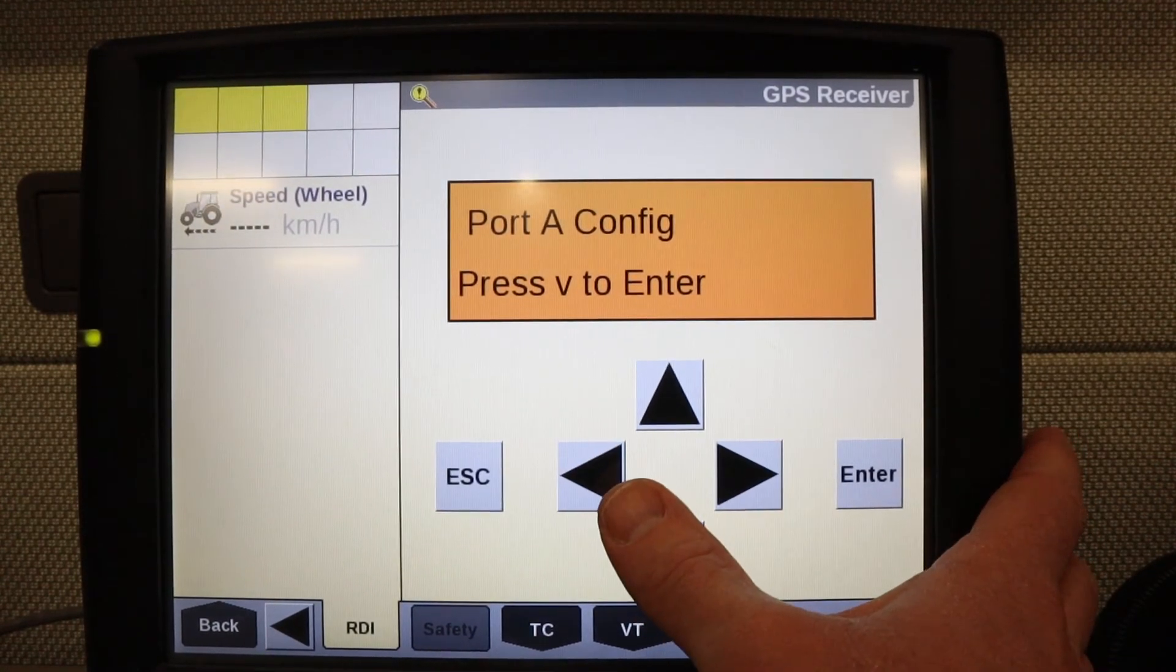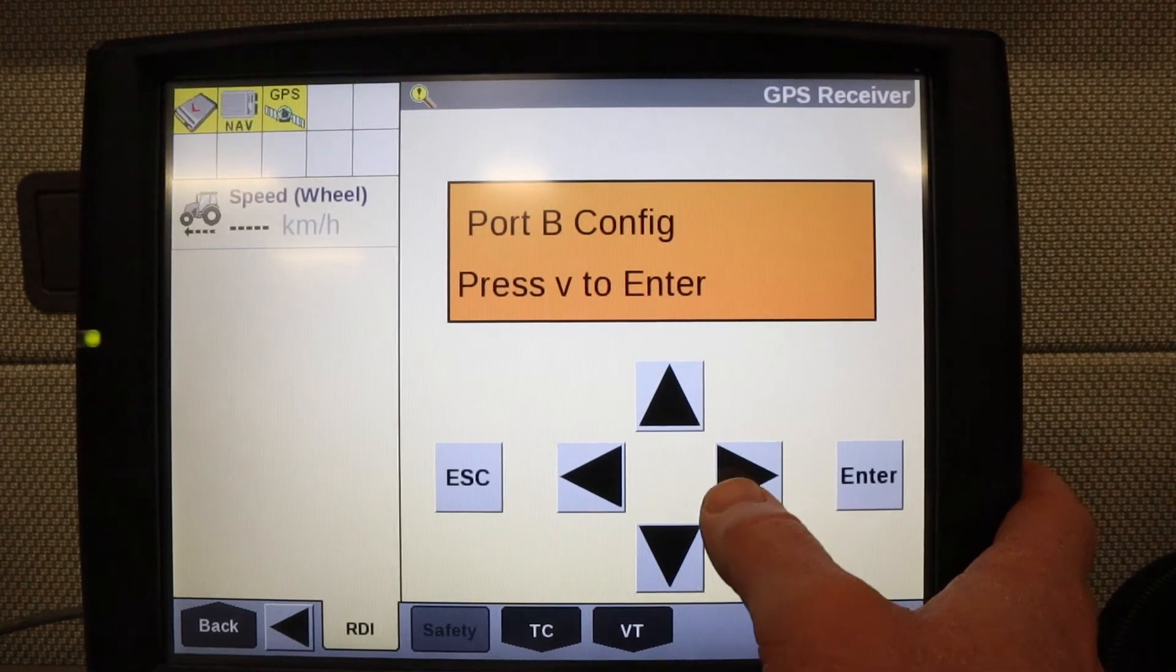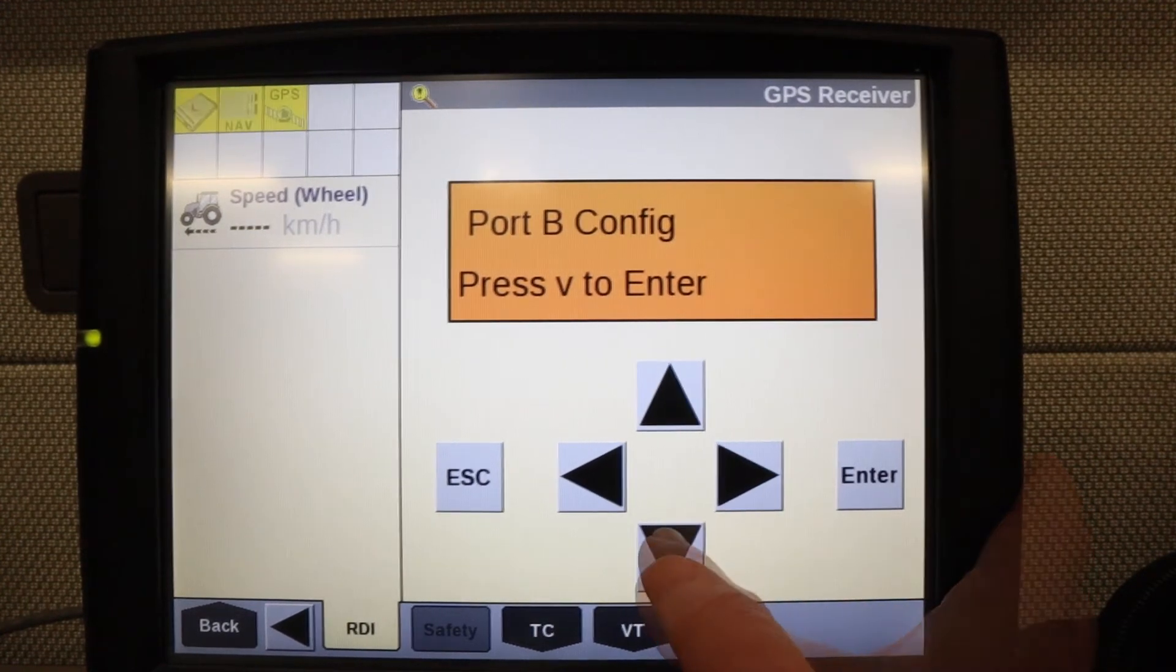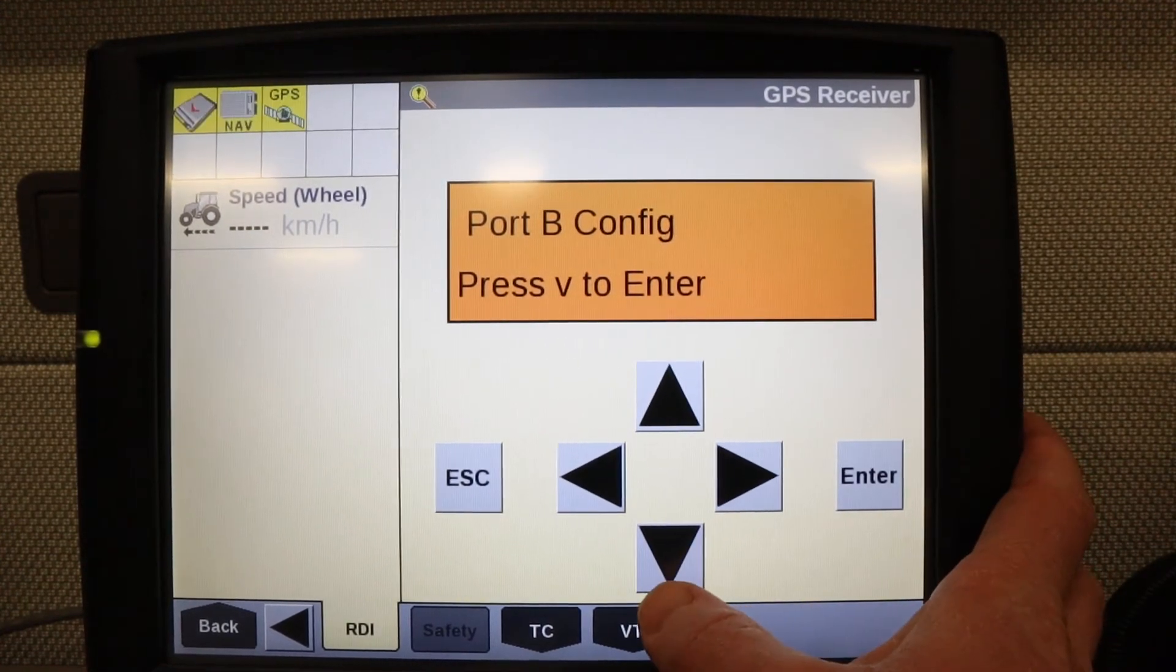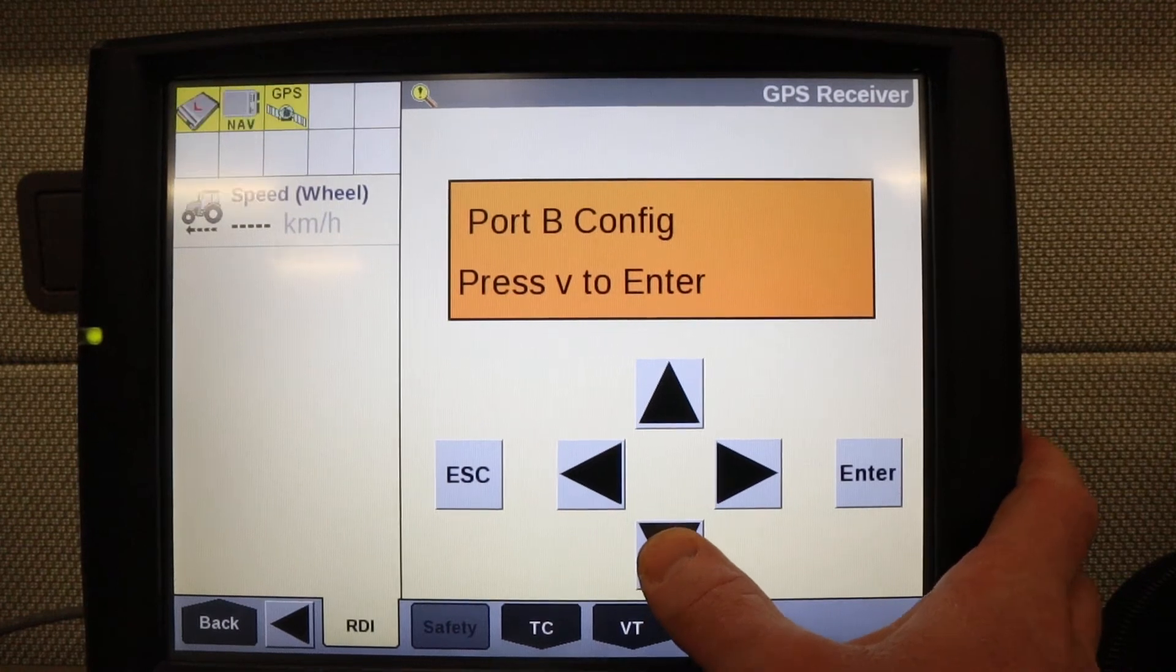If you connected to port A, you'll use it. B or C, you'll use those. I'm going to enter the port B config screen by pressing down.